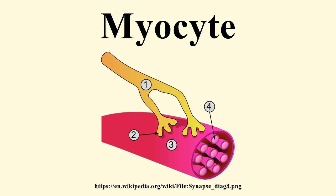There are three types of myofilaments. Thick filaments are composed of protein molecules called myosin; in striations of muscle bands, these are the dark filaments that make up the A-band. Thin filaments are composed of protein molecules called actin; in striations of muscle bands, these are the light filaments that make up the I-band. Elastic filaments are composed of titin, a large spring-like protein. These filaments anchor the thick filaments to the Z-disc. Together, these myofilaments work to produce a muscle contraction.